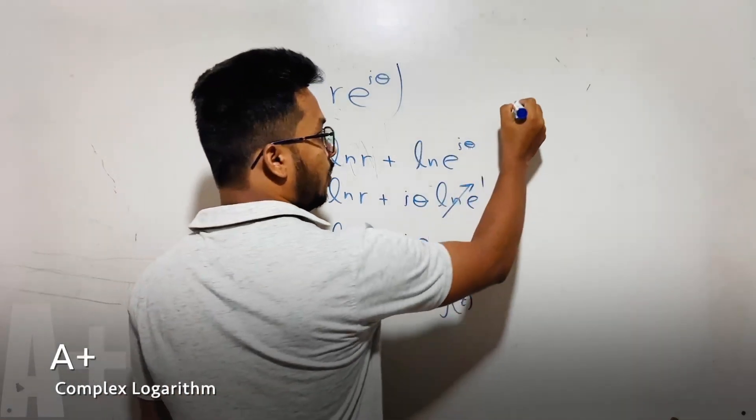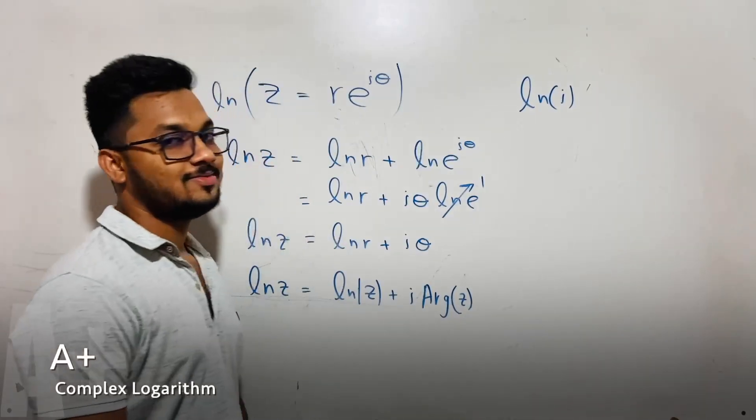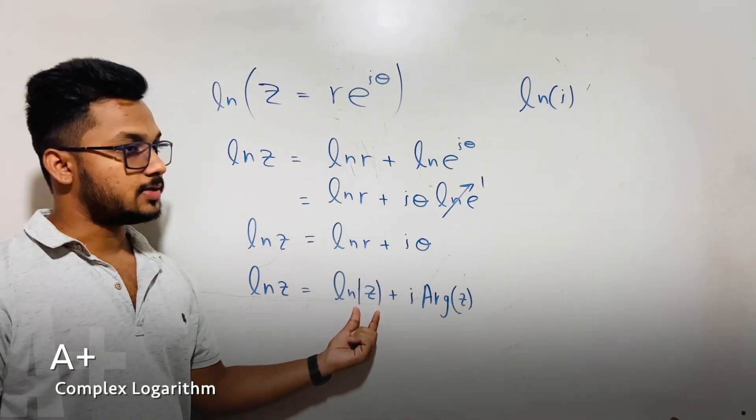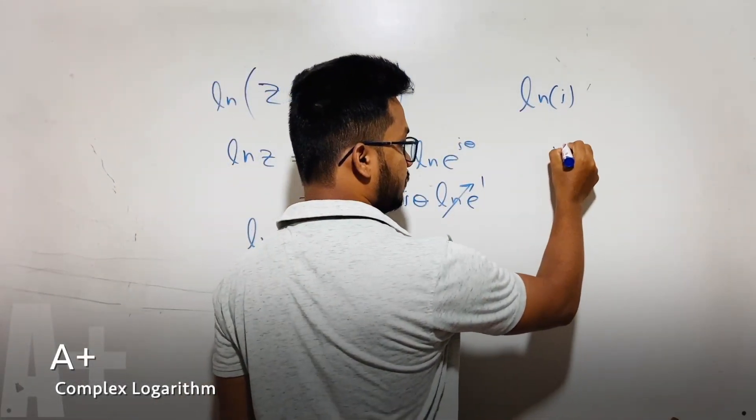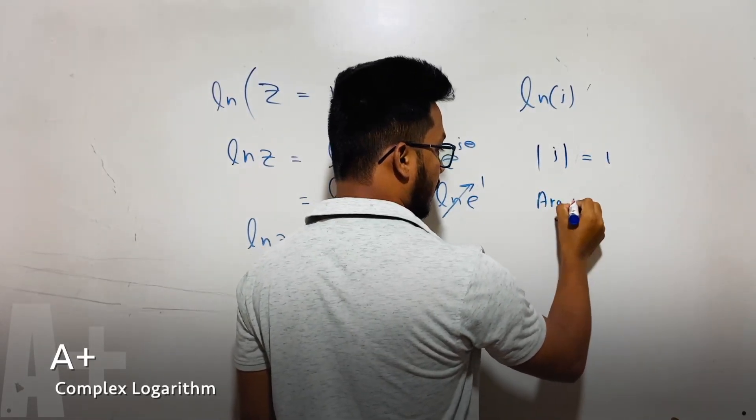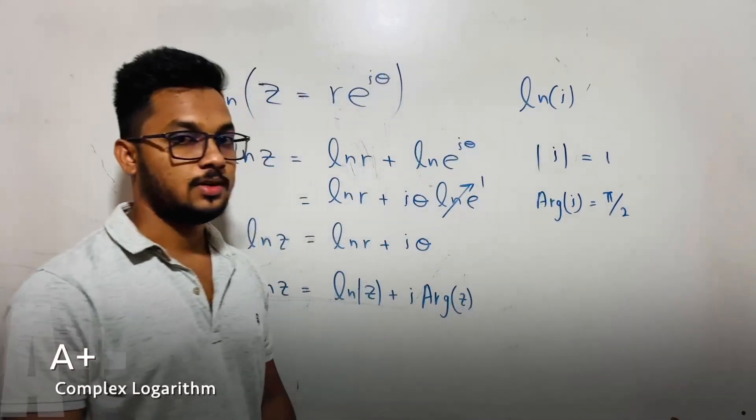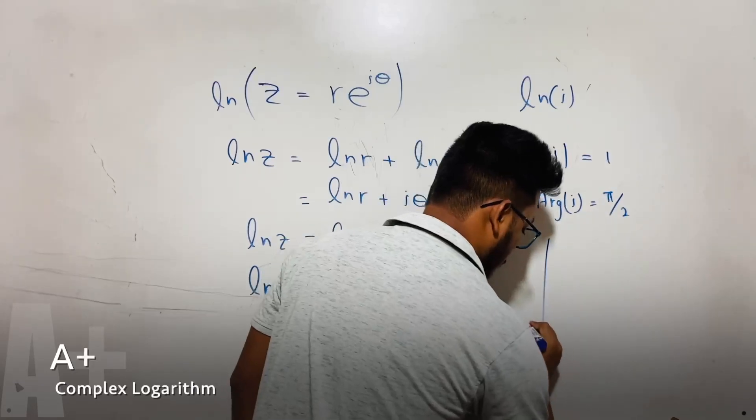How do we find the value of ln i? That's a very simple thing. So what we need: first thing is modulus. Modulus of i equals 1, and argument of i equals π over 2. Okay, these are very simple things.